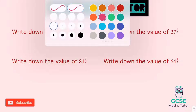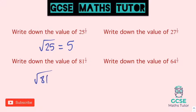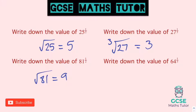25 to the power of a half — two on the bottom means square root, and the square root of 25 is five. 81 to the power of a half — square root of 81 is nine. 27 to the power of a third has a three on the bottom, so that is the cube root of 27, which is three. 64 to the power of a third is the cube root of 64, which is four — four times four is 16, times four again is 64.